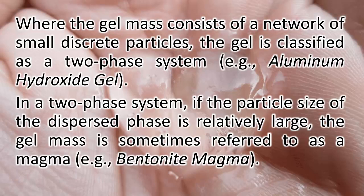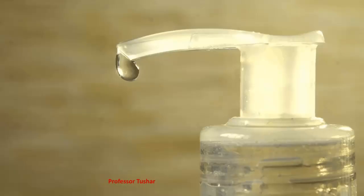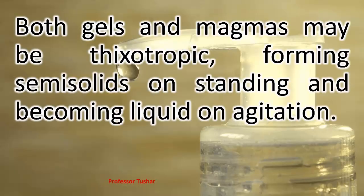In a two-phase system, if the particle size of the dispersed phase is relatively large, the gel mass is sometimes referred to as a magma, for example, bentonite magma. Both gels and magmas may be thixotropic, forming semi-solids on standing and becoming liquid on agitation.